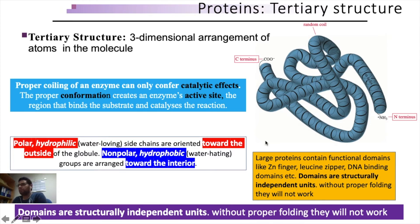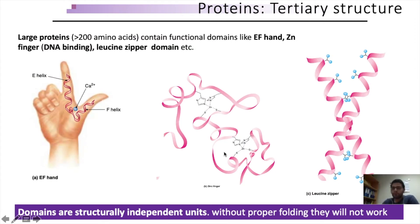Many proteins larger than 200 amino acids contain various functional domains, and these domains can only work if the protein is folded properly. Examples of these domains are the EF hand, zinc finger, and leucine zipper domains. The EF hand is a helix-loop-helix conformation that binds specifically with calcium ions.